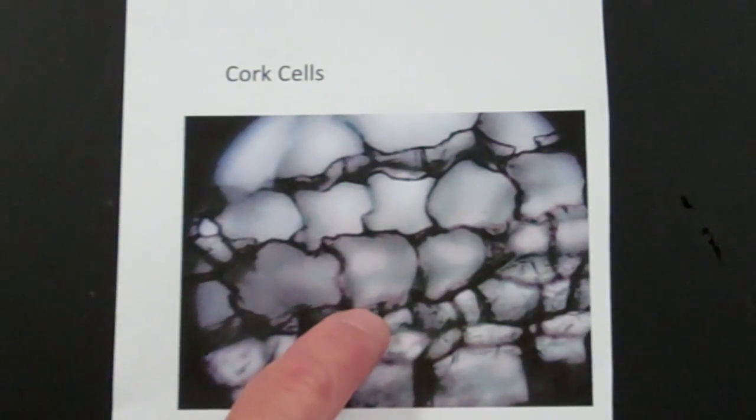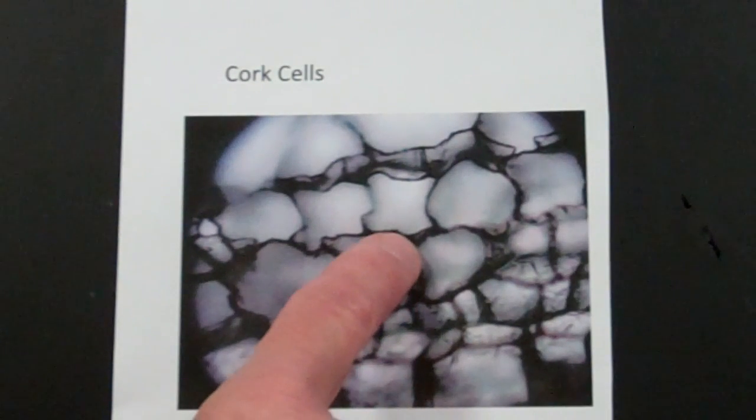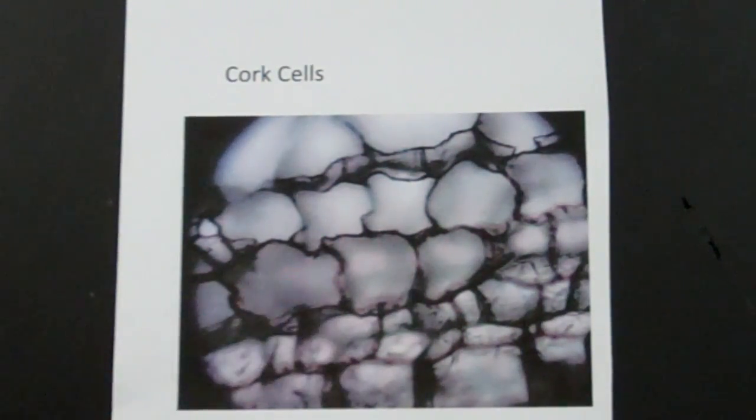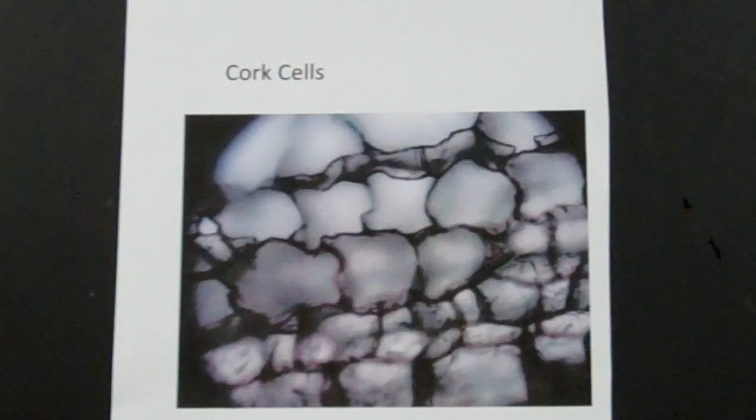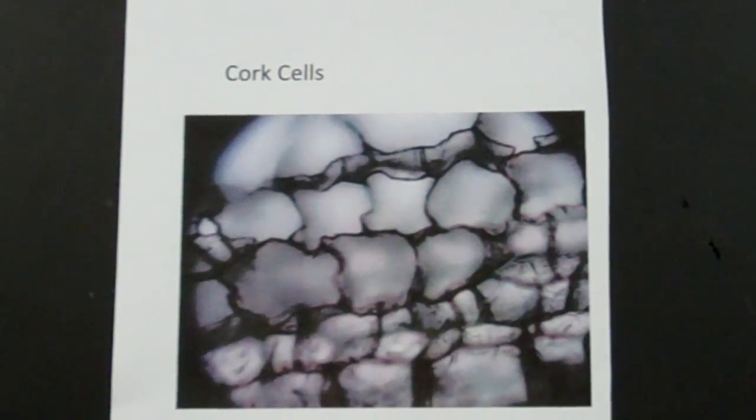Each one of these units that you see is one cork cell. And really you're only seeing the cell wall. There's nothing else that remains of the cell because it dried out. Enjoy!